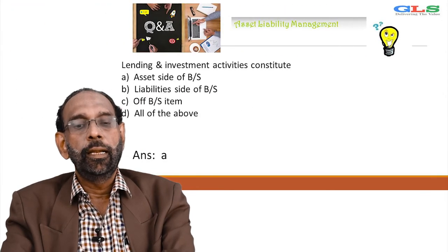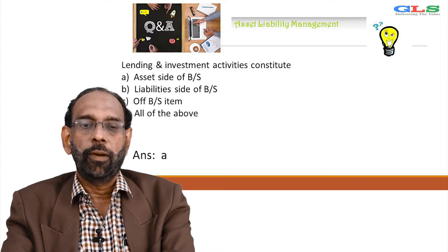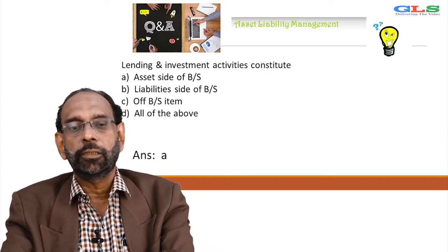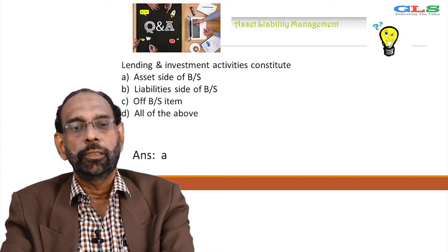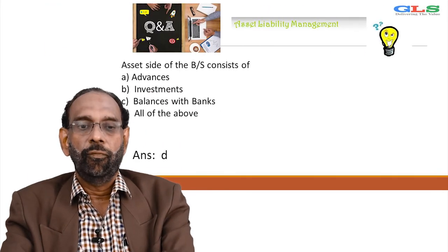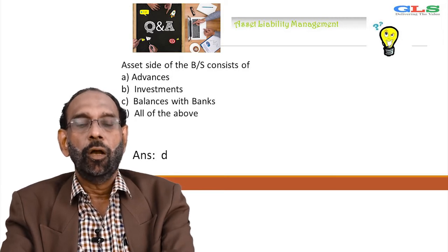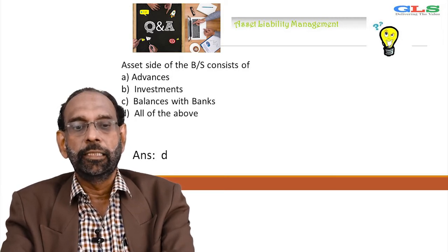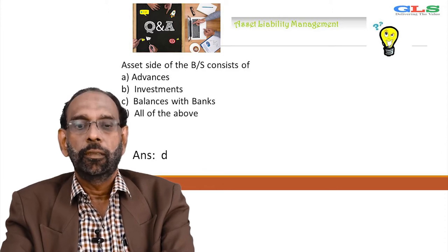Next question: lending and investment activities constitute — A: asset side of balance sheet, B: liability side of balance sheet, C: off balance sheet item, D: all of the above. Answer is A, that is asset side of balance sheet. Asset side of balance sheet consists of advances, investments, balances with banks. The answer is D — that is advances, investment and balances with the banks.